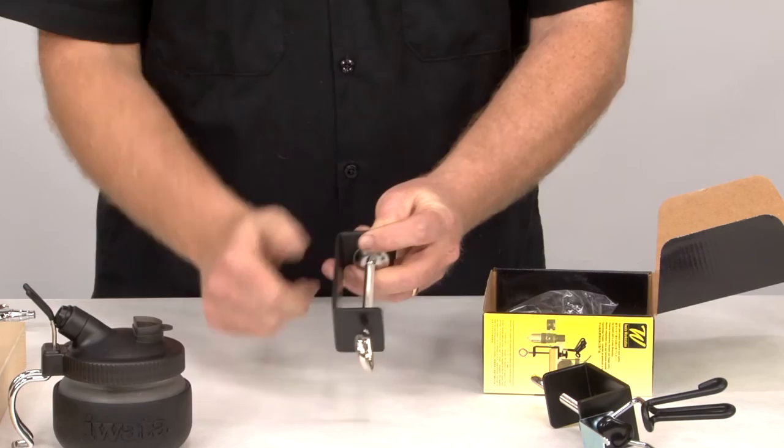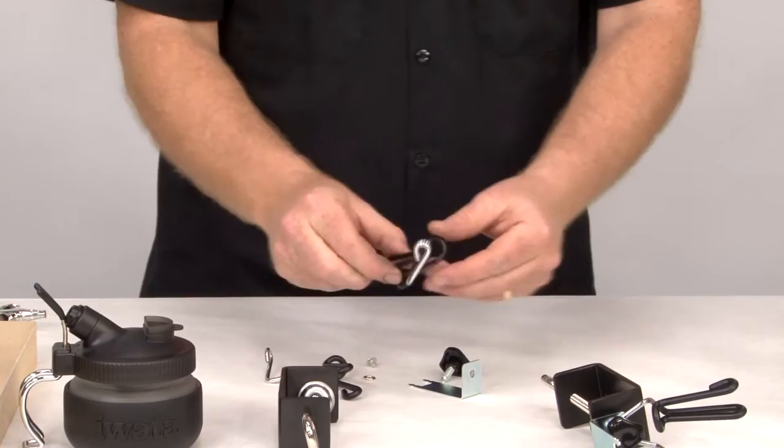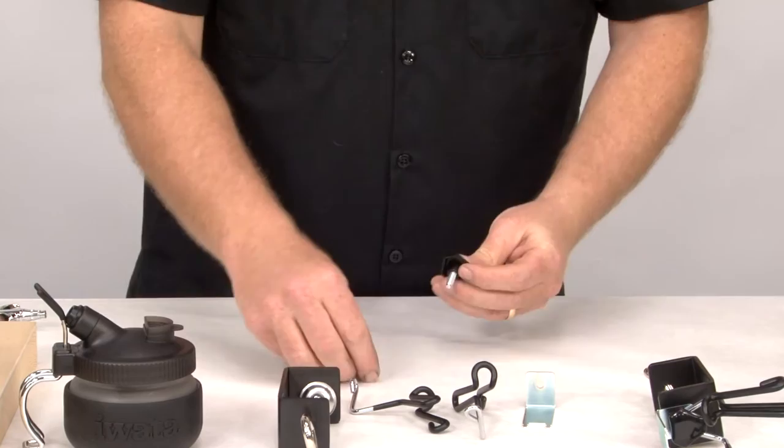We also have in here all the goodies, which include instructions, the airbrush holders themselves, the spray-out pot mounting bracket, the bolt, a lock washer, and a little mystery screw. We'll talk about the mystery screw in a second.